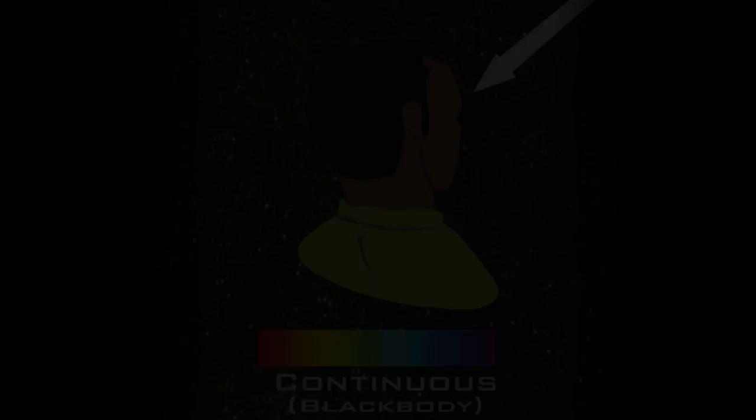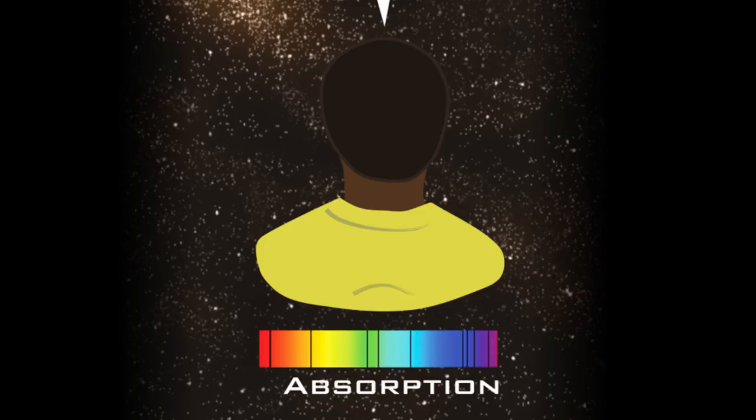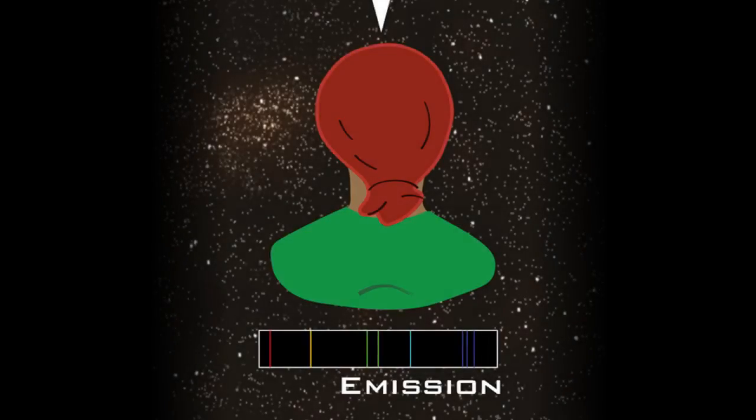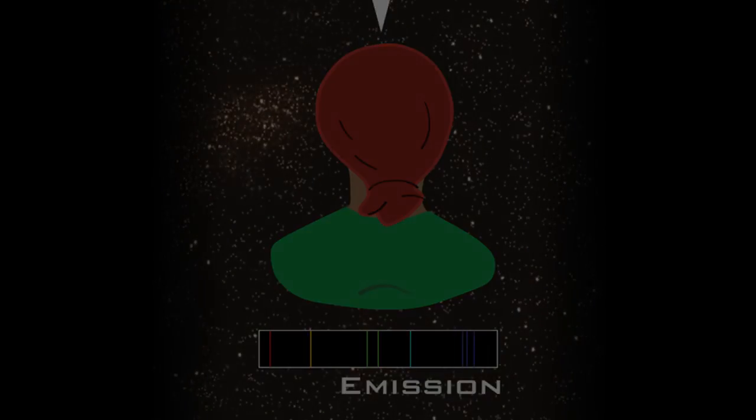Continuous spectra have all wavelengths present, absorption spectra have a few wavelengths missing, and emission spectra have only a few wavelengths present.